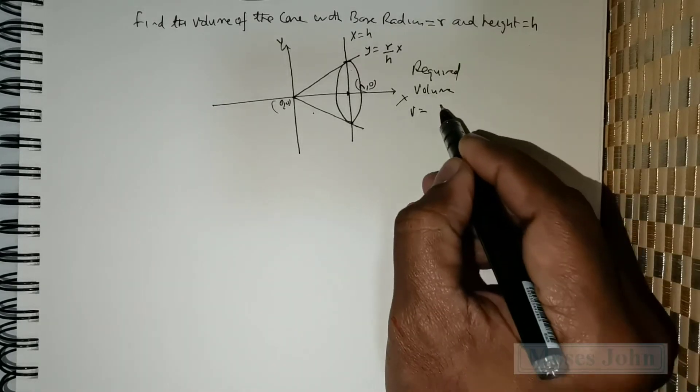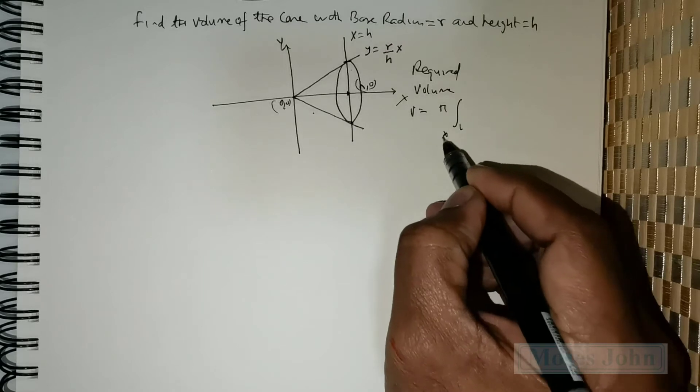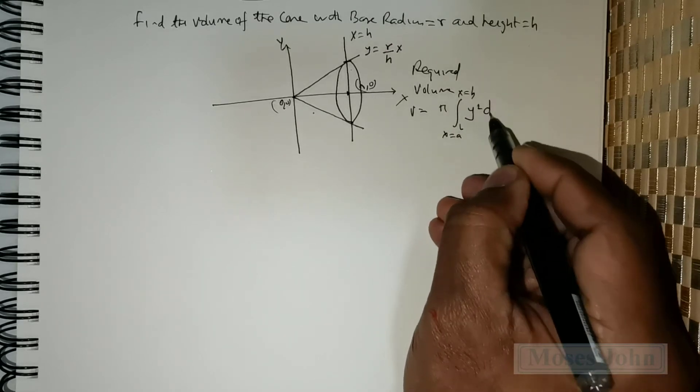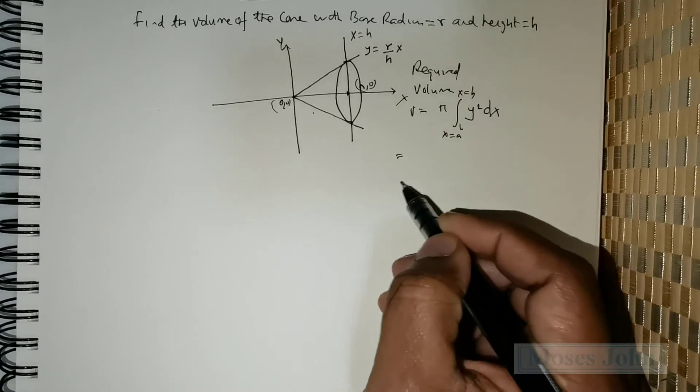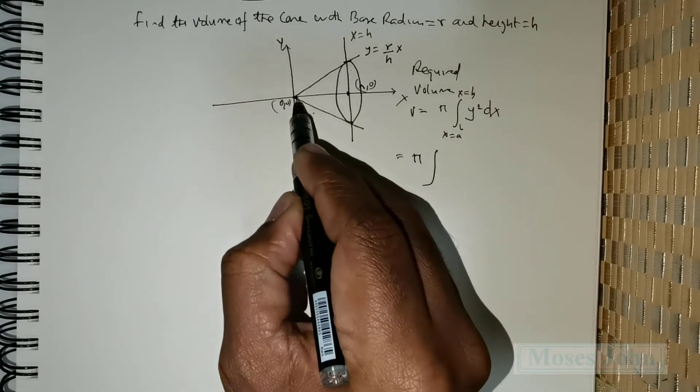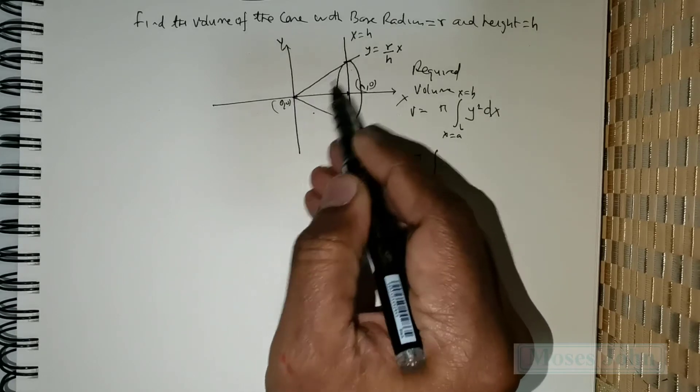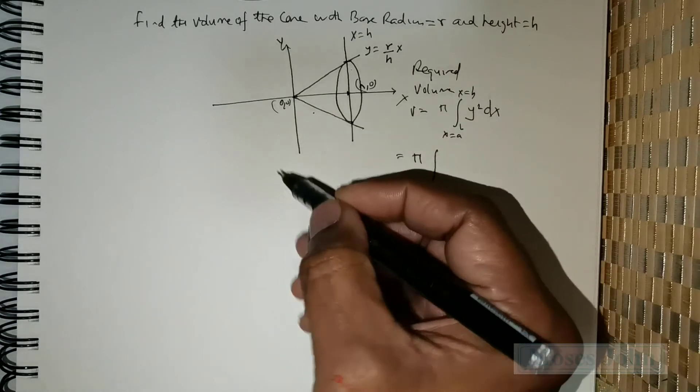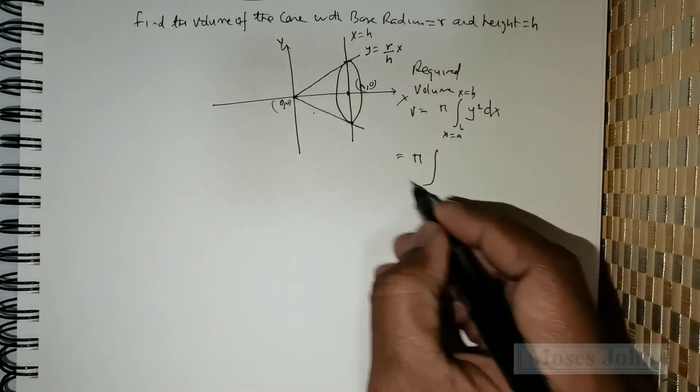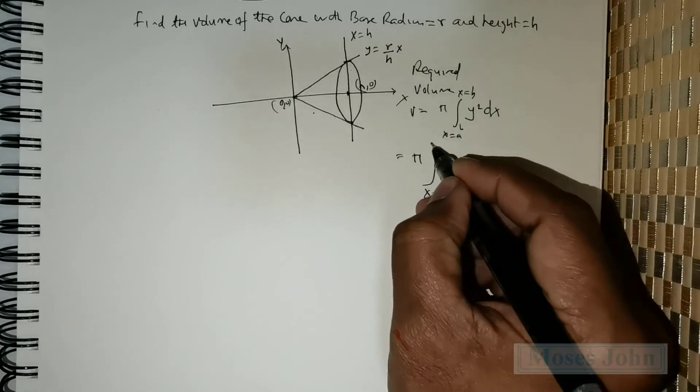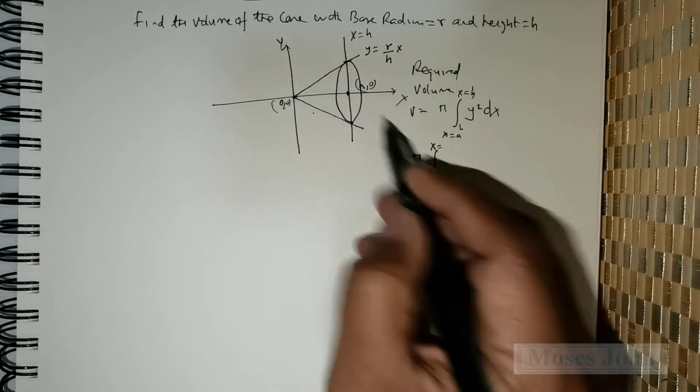V is equal to pi times integral from x equals a to x equals b of y squared dx. This is the formula we know. So this is going to be pi times integral. Now, I would be revolving the line y is equal to r divided by h times x above the x-axis. So that's going to be from x is equal to 0 to x is equal to h.